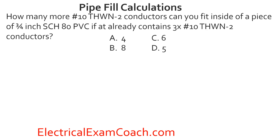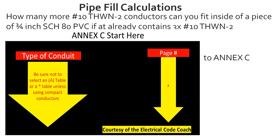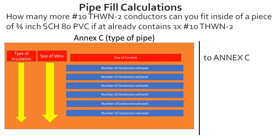Practice problem: How many more number 10 THWN-2 conductors can you fit inside a piece of 3/4-inch schedule 80 PVC that already contains three number 10 THWN-2 conductors? Are they all the same size and insulation? Yes. Head to Annex C, find schedule 80 PVC on the left — not the A version — cross over to the page number. Read the black bold heading, find THWN-2 insulation, find size 10 wire, come across the top to 3/4-inch conduit, and tee off. The starting value is 7. Minus the 3 already in the pipe, we can fit 4 more.